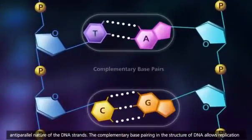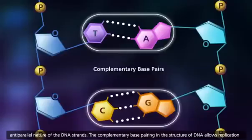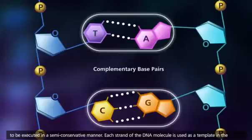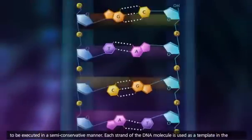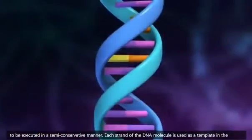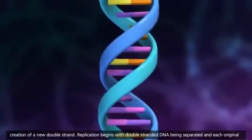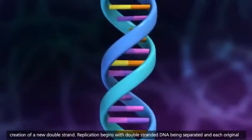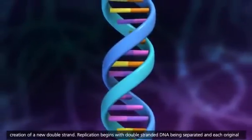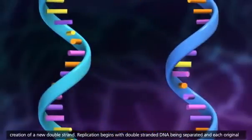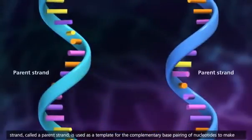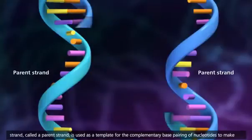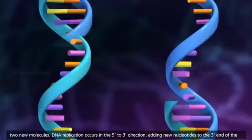The complementary base pairing in the structure of DNA allows replication to be executed in a semi-conservative manner. Each strand of the DNA molecule is used as a template in the creation of a new double strand. Replication begins with double-stranded DNA being separated, and each original strand, called a parent strand, is used as a template for the complementary base pairing of nucleotides to make two new molecules.